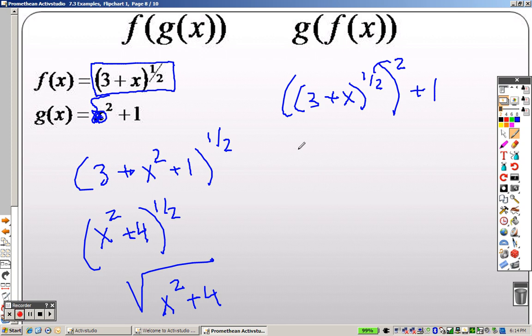1 half squared is 3 plus x because that cancels out and I have a plus 1 there. So it's really like saying x plus 4 when I combine them together. That's really all that that is.